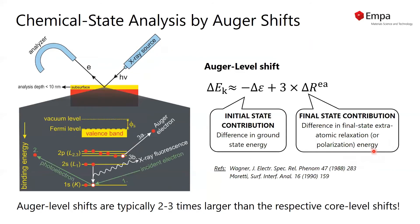As shown by Wagner and Moretti, the Auger shift, as for the core level shift, is a contribution of initial and final state effects. But now we see that the final state contribution is about three times the extra-atomic relaxation energy.